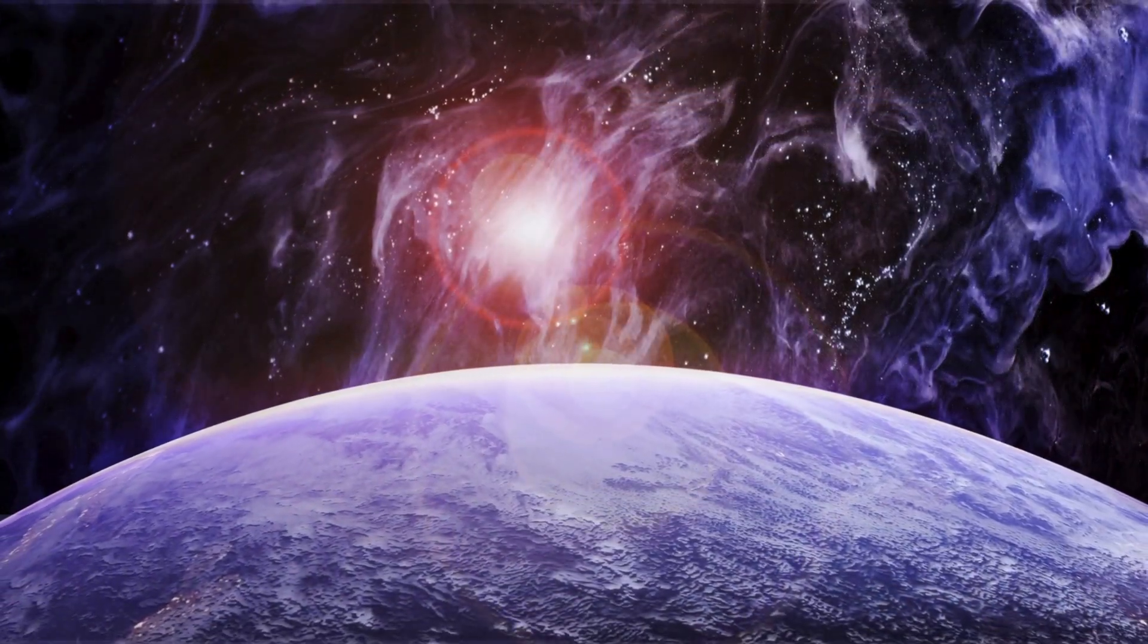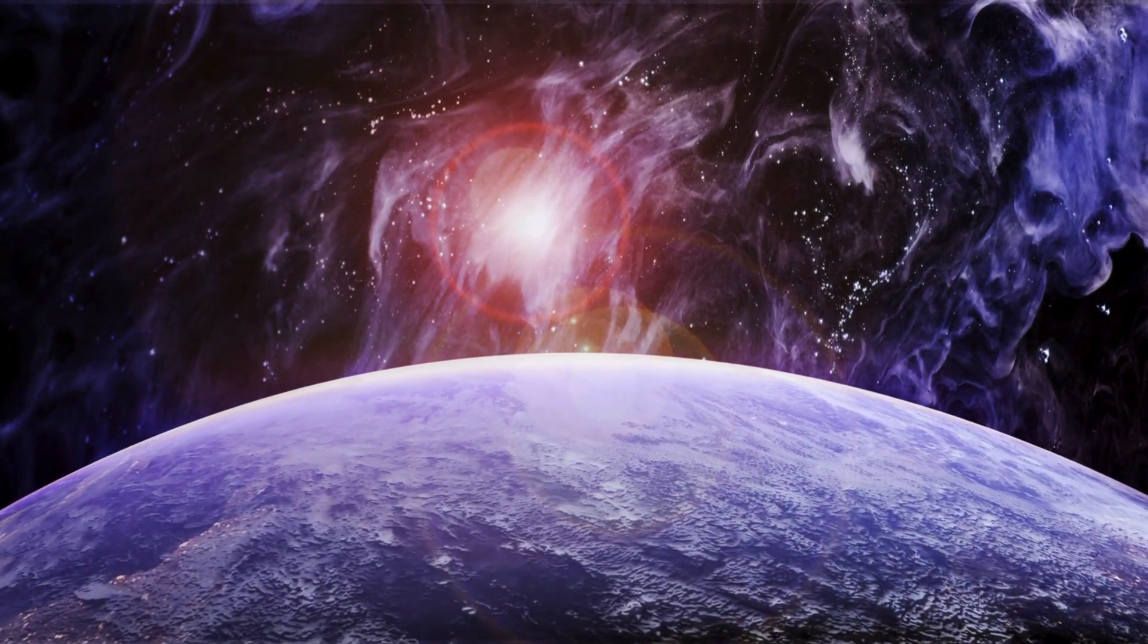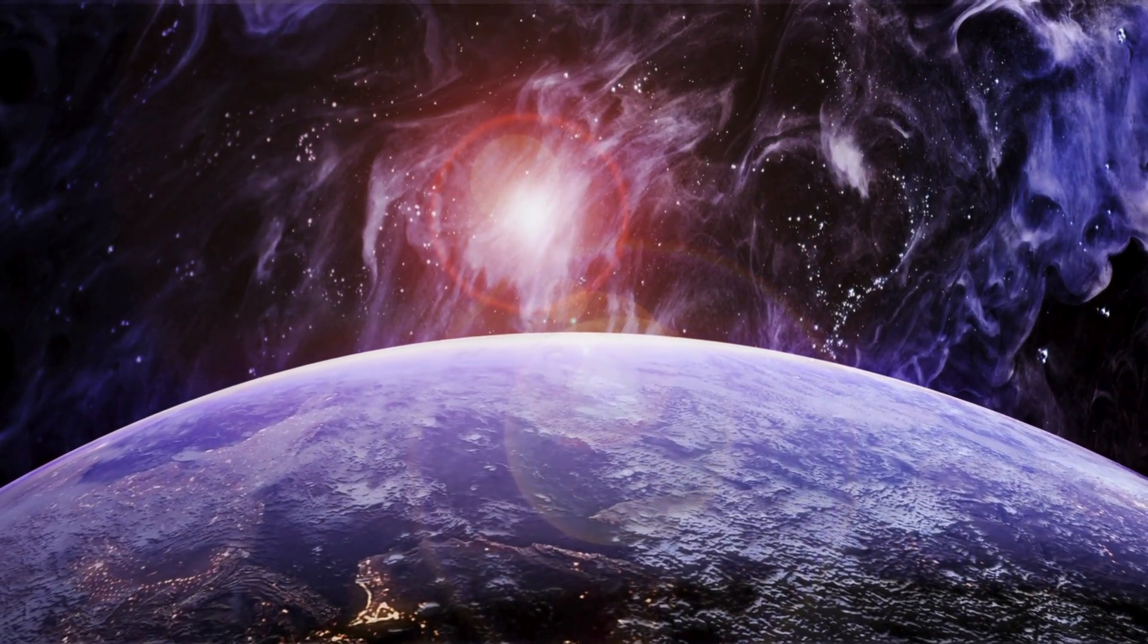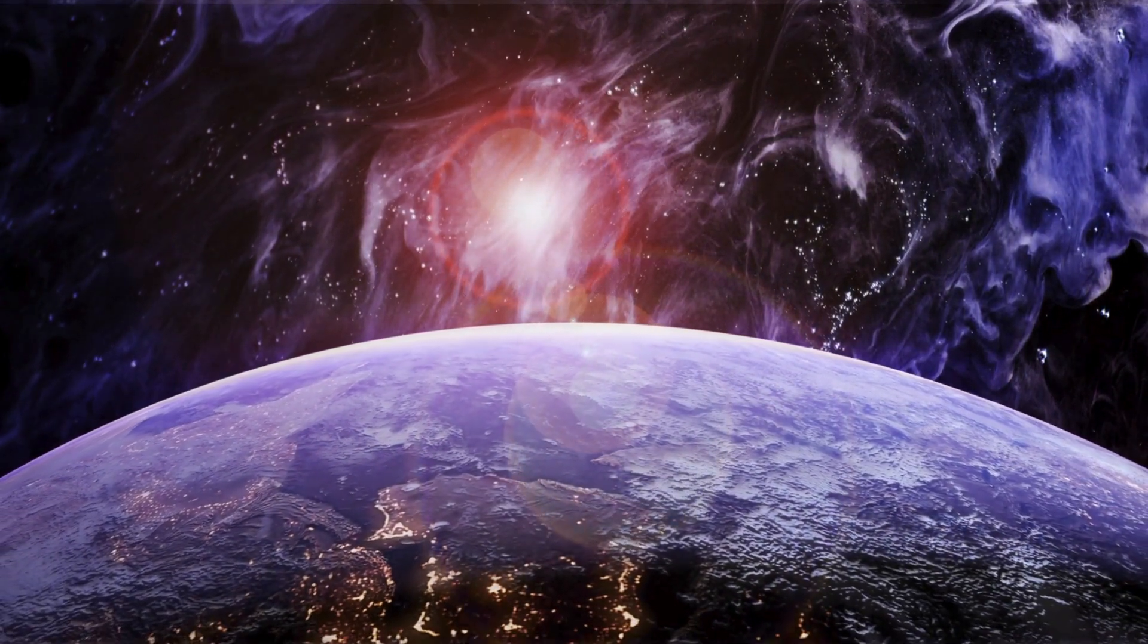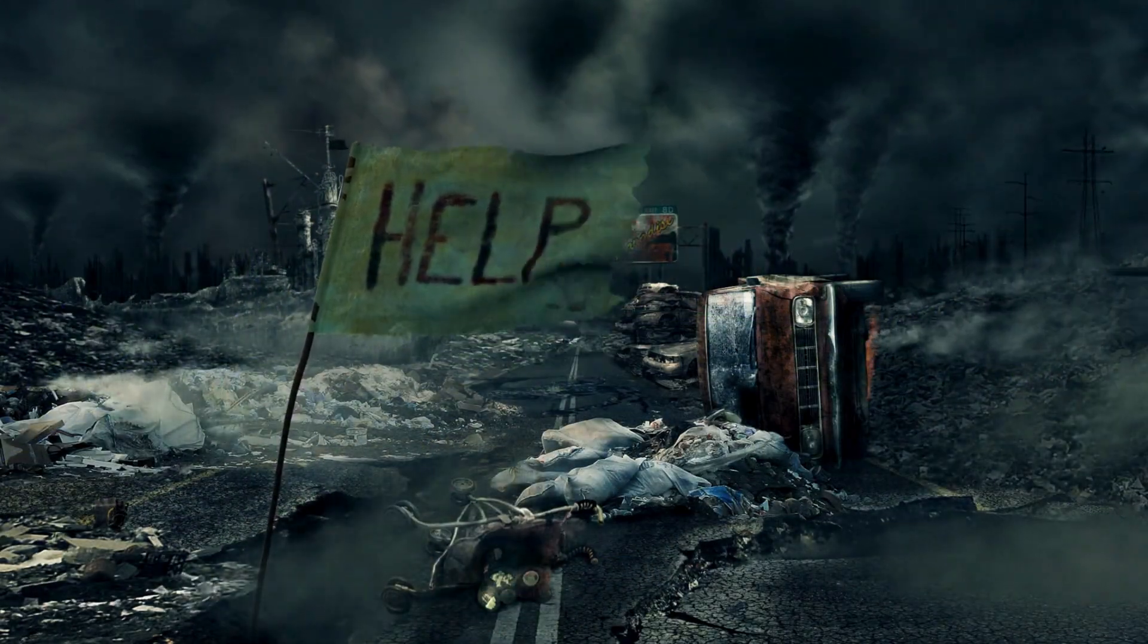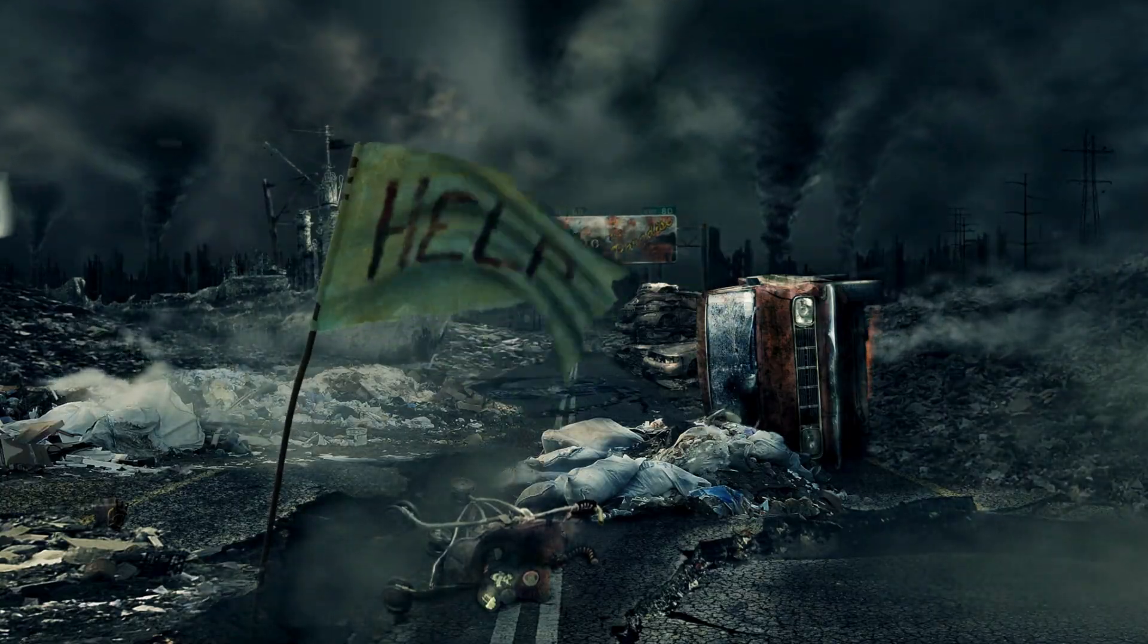Since the Sun would disappear, there would be nothing strong enough to keep our planet gravitationally bound in the solar system. So, our planet, without the Sun holding us in orbit, would start freely floating in space, while surviving Earth inhabitants would desperately try to stay alive.